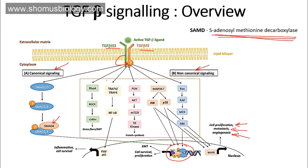In the non-canonical pathway, once TGF beta receptor is activated by phosphorylation, it activates PI3K, which activates AKT, which then activates mTOR, and finally activates other kinase proteins like S6 kinase, helping in the protein synthesis pathway.